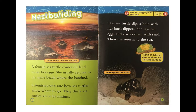Nest building: a female turtle comes on land to lay her eggs. She usually returns to the same beach where she hatched. Scientists aren't sure how sea turtles know where to go — they think sea turtles know by instinct. The sea turtle digs a hole with her back flippers, lays her eggs, and covers them with sand. Then she returns to sea. Turtle term: 'instinct' means behavior that animals are born knowing how to do.